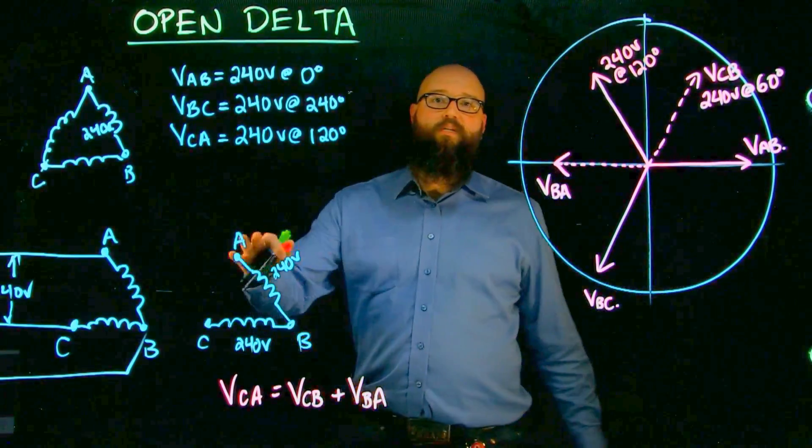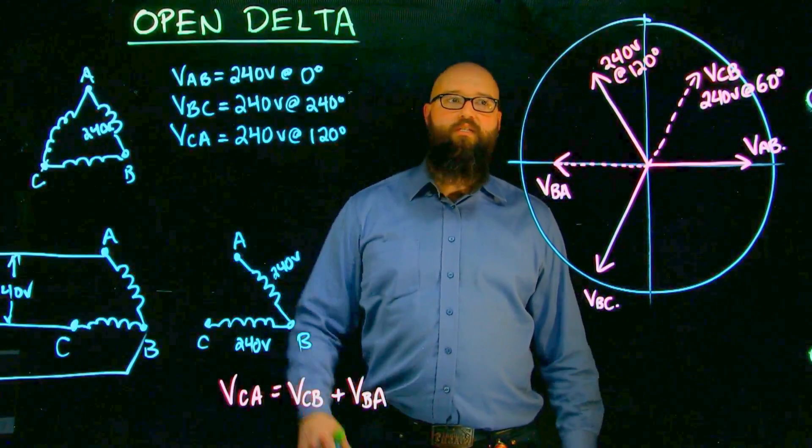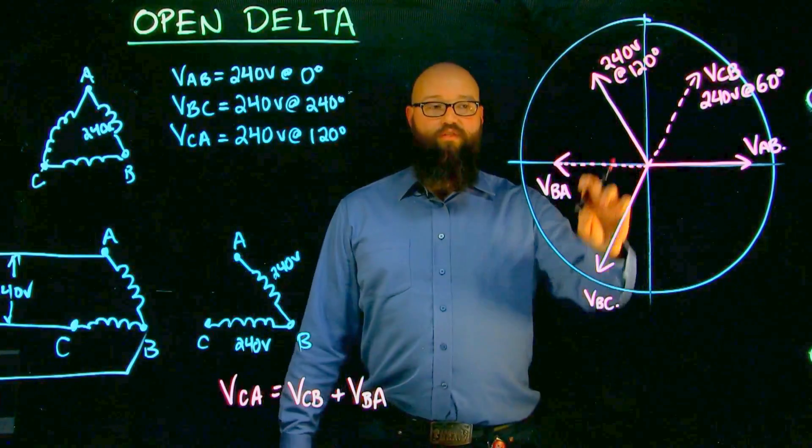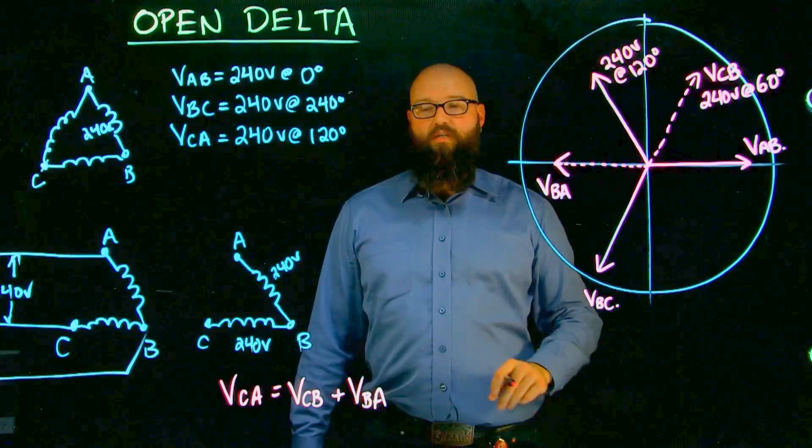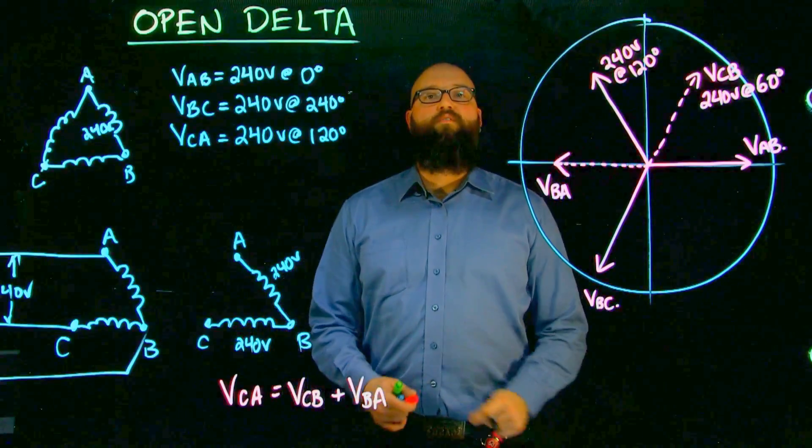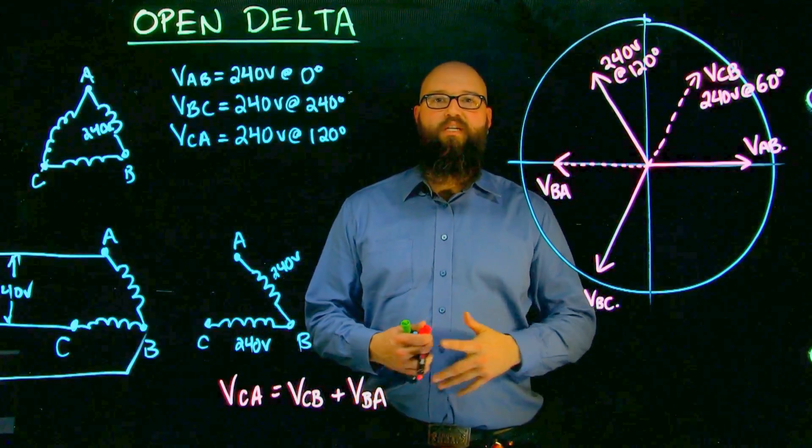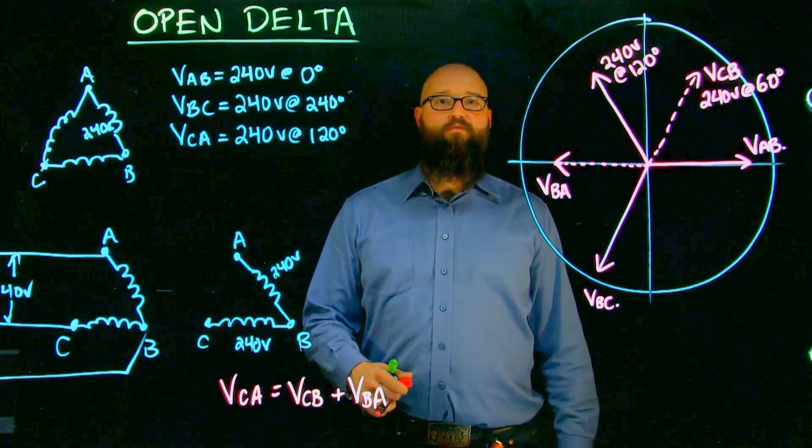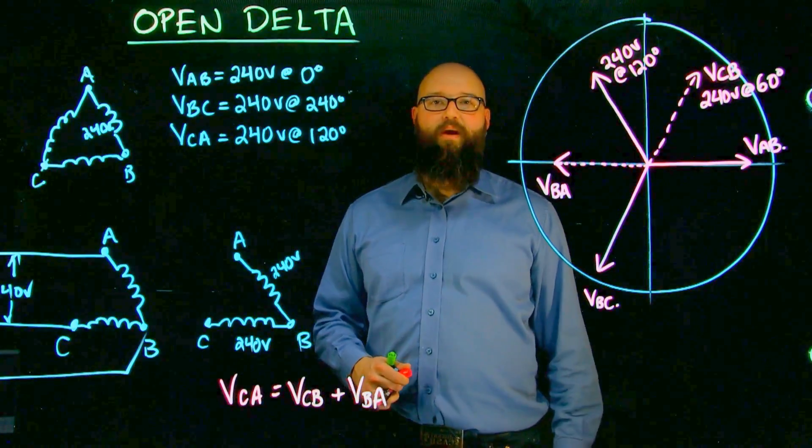That proves even in our open delta system when we lose one of those windings, we still have that third phase voltage available to us from our transformer. Hopefully this has helped. Thanks for watching. We'll see you next time where we're going to talk about reduced capacity of an open delta system. Thank you. Bye-bye.